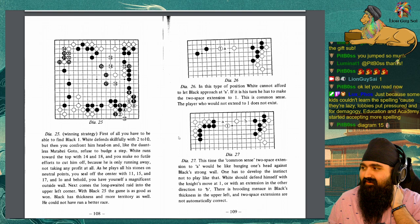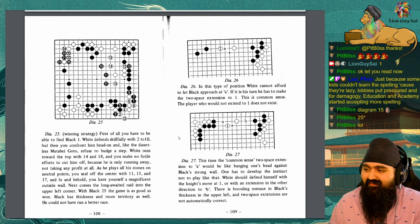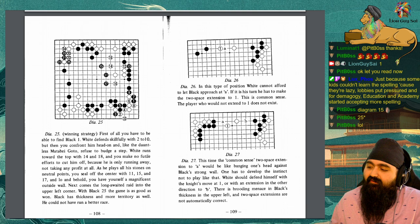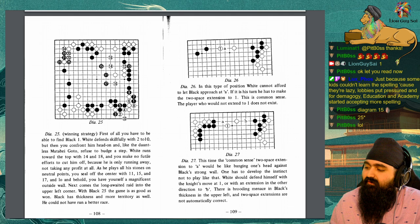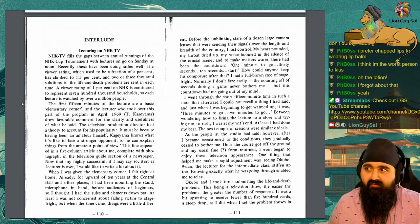In this type of position, white cannot afford to let black approach A. If it is his turn, he has to make the 2-space extension to 1. This is common sense. The player who would not extend to 1 does not exist. Diagram 27. This time, the common sense 2-space extension to A would be like banging one's head against black's strong wall. One has to develop the instinct to not play like that. White should defend himself with the knight's move at 1, or with an extension in the other direction to B. There is a brooding menace in black's thickness in the upper left, and the 2-space extensions are not automatically correct.